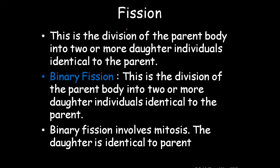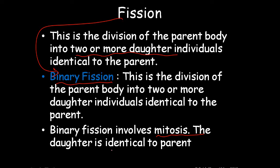First is fission — the division of the parent's body into two or more daughter individuals identical to the parent. Under this comes binary fission, which involves mitosis. The parent and daughter individuals are identical to each other.